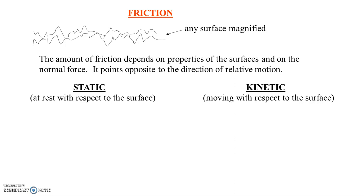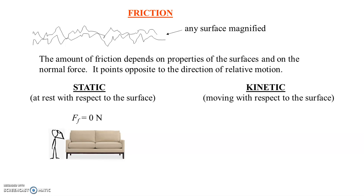Let's tackle the static friction first. Let's go back to the idea of the couch. You're pondering moving the couch — you're not moving it yet and you have not touched it. You're not applying a force to the couch. So how much friction should there be on the couch? Well, if you're not touching the couch and not even trying to move it, the force of friction on the couch should be zero. Because if it weren't, there would be a friction force on the couch, and all of a sudden the couch would start to accelerate. For example, if there's a friction force of 25 newtons and nothing else going on, the couch is going to start to accelerate — and of course that doesn't make any sense. So if you're not touching it, the force of friction is zero newtons.